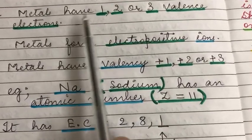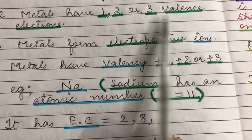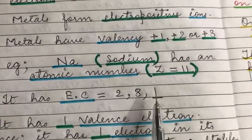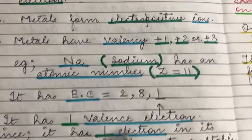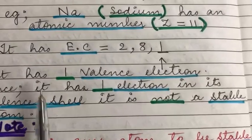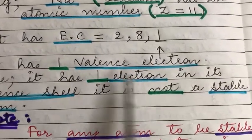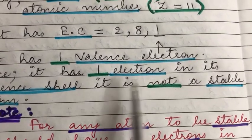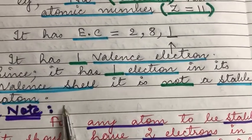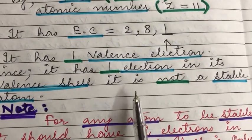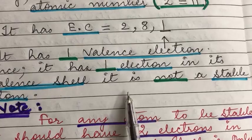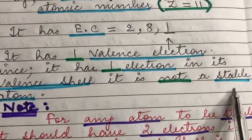It has one electron in its valence shell. As we have just discussed, metals have one, two, or three valence electrons, so this tells us that sodium is a metal. It has one electron in its valence shell, and since it has one electron there, it is a metal.